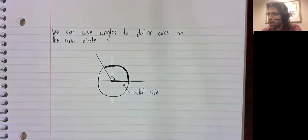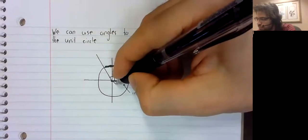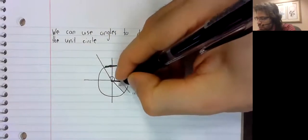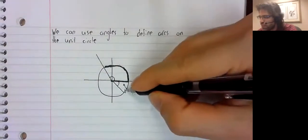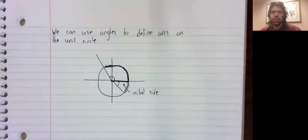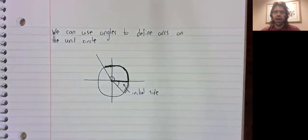Likewise, if you had a negative angle, you would go the other direction. And that angle, once again, defines an arc.